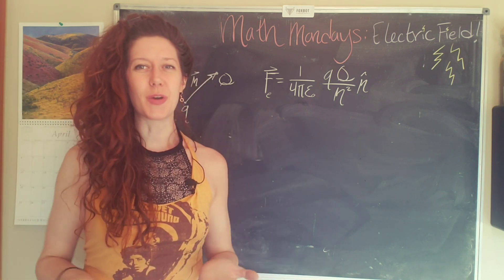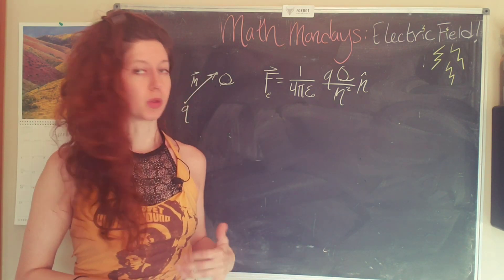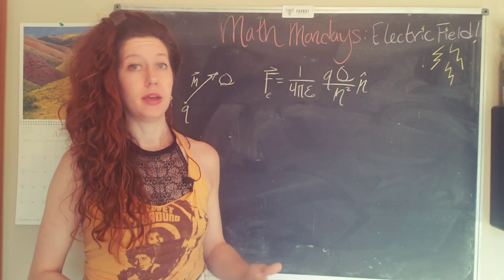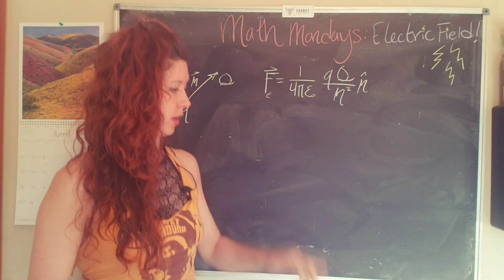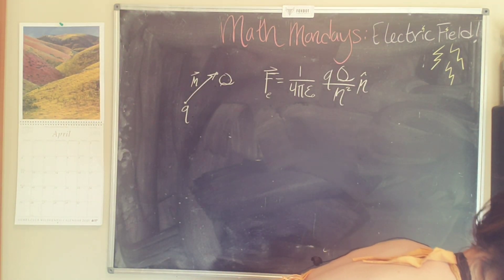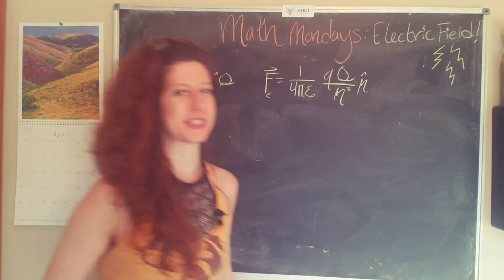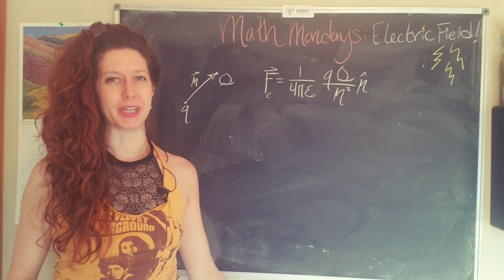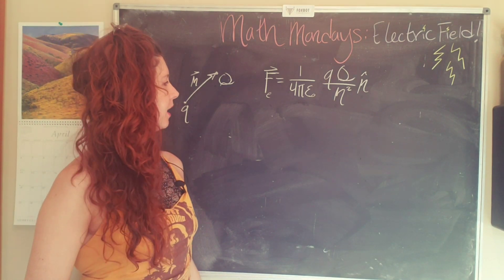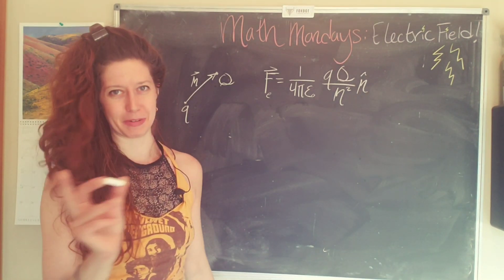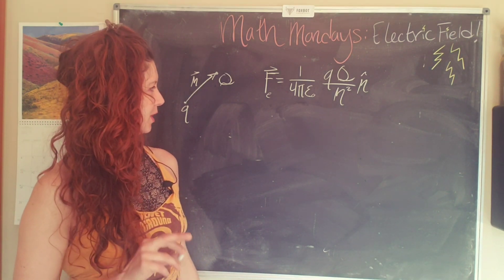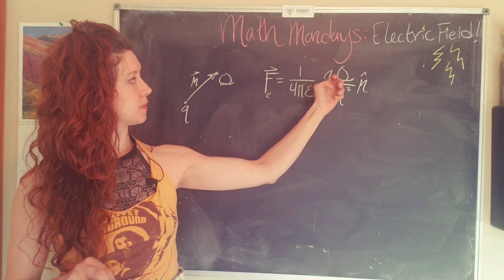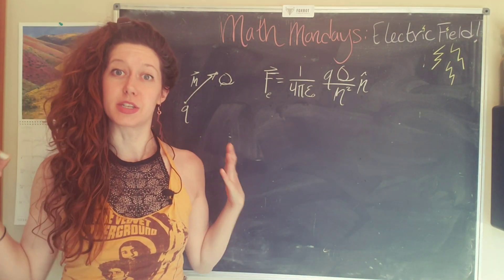We will start from Coulomb's law, which as a refresher was determined experimentally — meaning someone discovered it, that's why it's named after them. It's called Coulomb's law because it was discovered by a person named Coulomb. Some of my physics history is there and some of it is not.